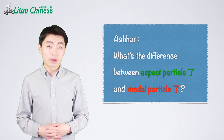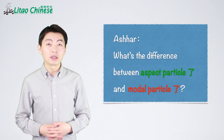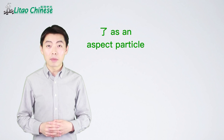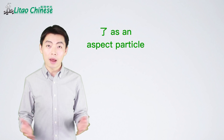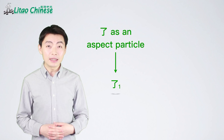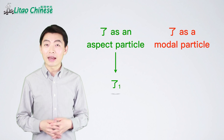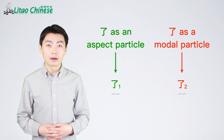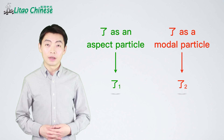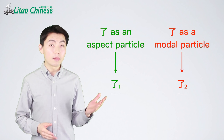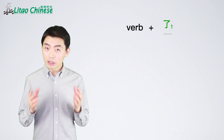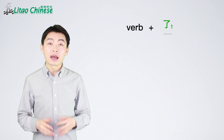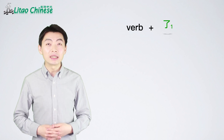First, you need to know that there are two types of 了. 了 as an aspect particle — in Chinese grammar, we call it 了₁ (Le Yi). 了 as a modal particle, we call it 了₂ (Le Er). The biggest difference between them is that 了₁ directly follows the verb to indicate that an action is completed.